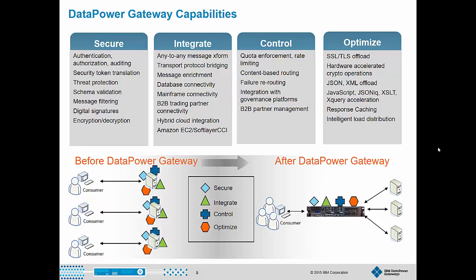We break up DataPower's capabilities into four pillars. For security, DataPower can act as a reverse proxy as well as a policy enforcement point to secure network traffic. It can perform cryptographic operations on message payloads such as encryption and decryption, as well as create or verify digital signatures. It can validate message conformance using JSON and XML schema to ensure message content contains no threats. DataPower can help with integration tasks such as transforming messages from JSON to XML or XML to COBOL copybook, and perform protocol bridging such as receiving a message over HTTP and putting the payload on a message queue. The control pillar highlights content-based routing, quota enforcement, and rate limiting. And finally, DataPower can optimize workloads with response caching, intelligent load distribution, and capabilities that reduce the load on your back-end systems.